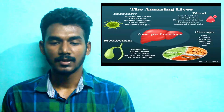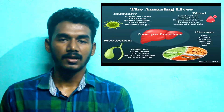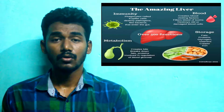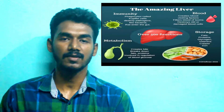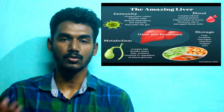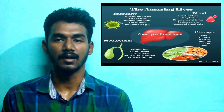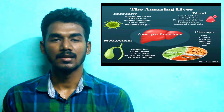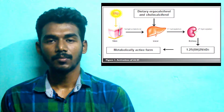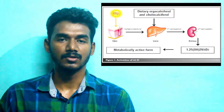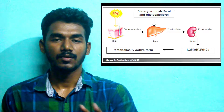The liver removes bad cholesterol, drugs, and toxins. The other main function is detoxification. That is why in cases of drug overdose, the liver is affected. The liver is also involved in vitamin activation — for example, vitamin D is activated through one of its processes in the liver.